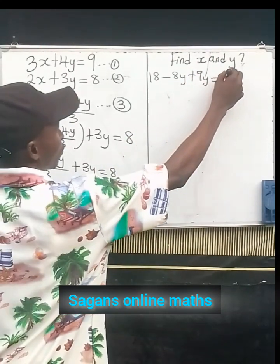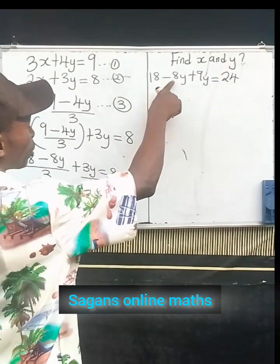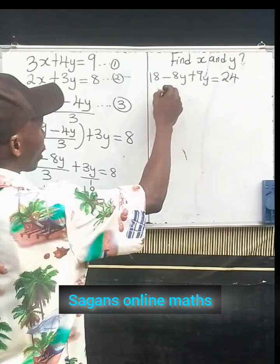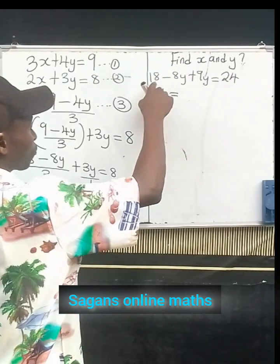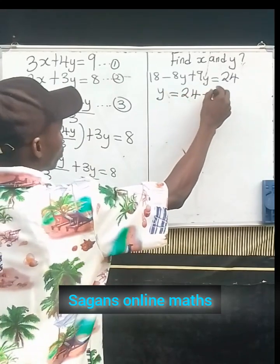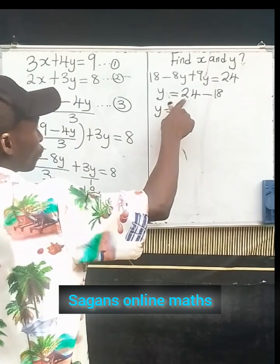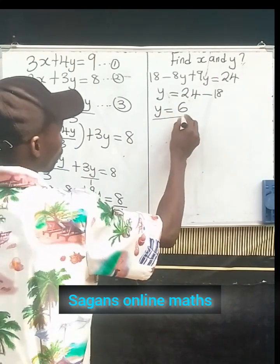Now let's collect like terms. -8y + 9y will give us y equals to 24 - 18. That means our y equals to 6. This is the value of y.